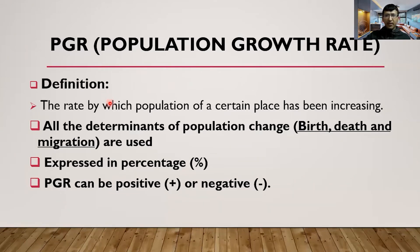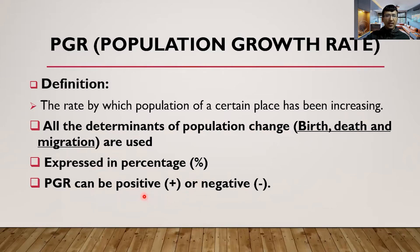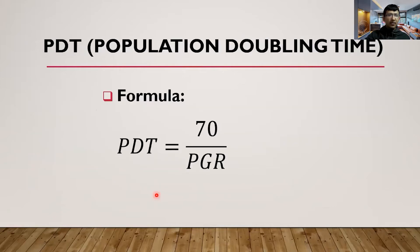The definition of Population Growth Rate is: the rate by which the population of a certain place has been increasing. Sometimes the value of PGR can be negative, which denotes the population is decreasing. All three determinants of population change — birth, death, and migration — are used. PGR is expressed in percentage and its value can be positive or negative.